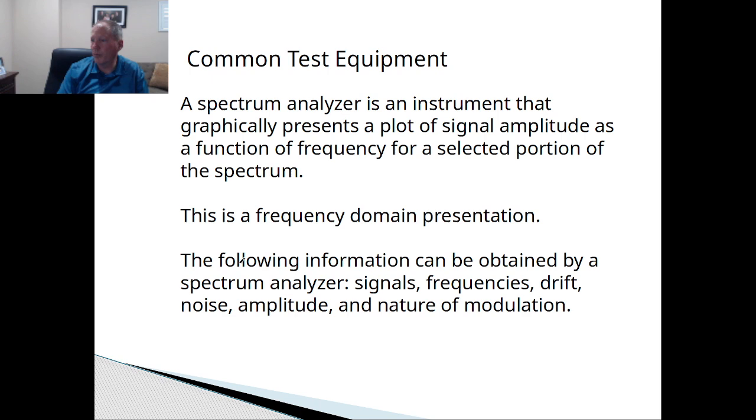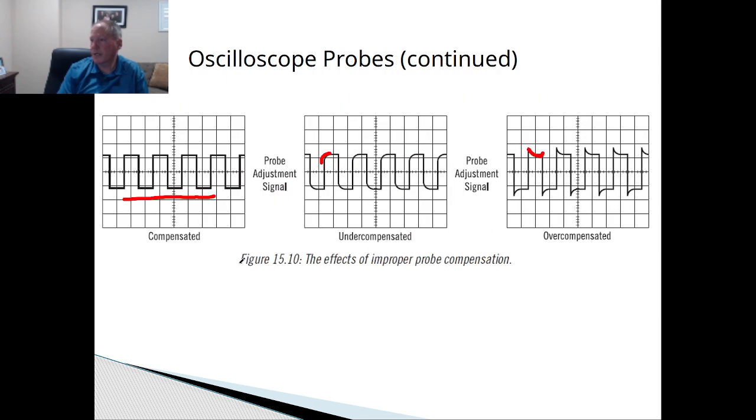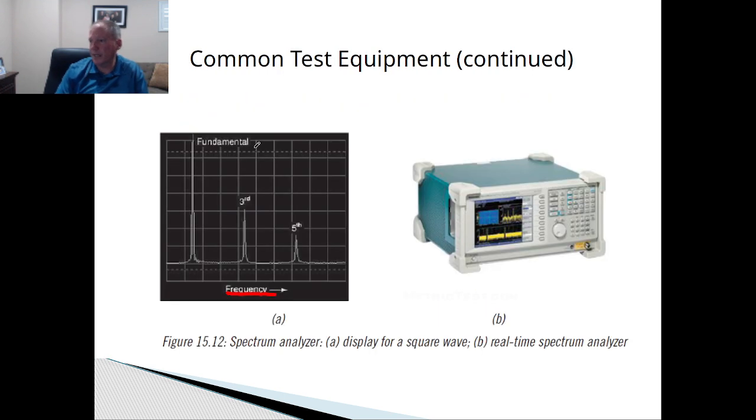Where's the scope? Scope here. This is the time domain. Right here we have our time. Whereas on our spectrum analyzer, this is frequency, right? So it's just a reciprocal, but it's a device that shows it. And then here's a digital spectrum analyzer.